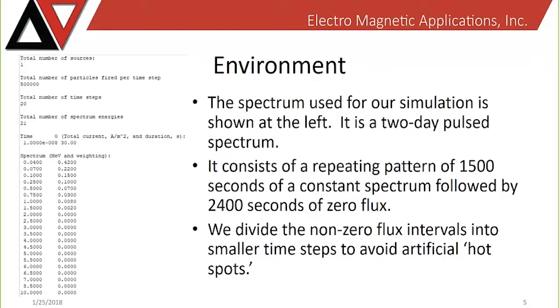The spectrum used in the simulation today, as shown on the left, is a two-day pulse spectrum consisting of 1,500 seconds of a constant spectrum followed by 2,400 seconds of zero flux. This roughly mimics an environment that the spacecraft may see if its orbit passes through the Van Allen Belt.